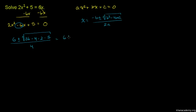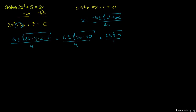This is going to be equal to 6 plus or minus the square root of 36 minus — 4 times 2 times 5 is 40 — so 36 minus 40, all over 4. That gives us 6 plus or minus the square root of negative 4, over 4.